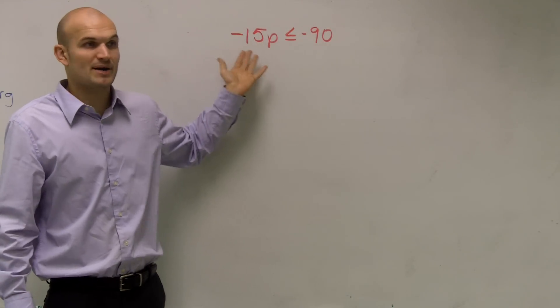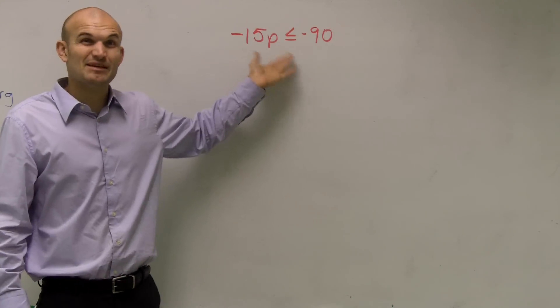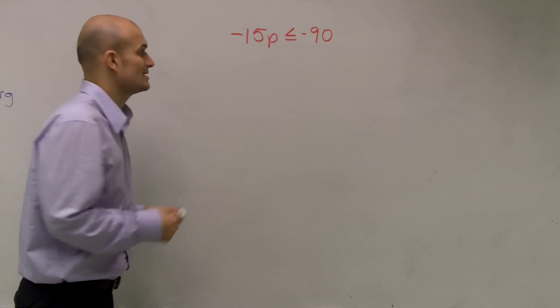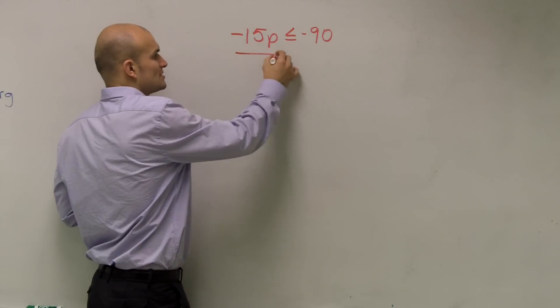Here, our variable is being multiplied by a negative 15. So to undo multiplication, we need to divide. We're going to divide by a negative 15 on both sides.